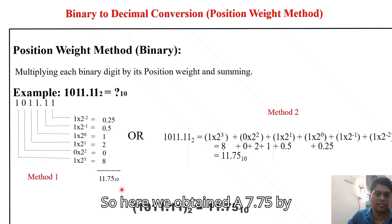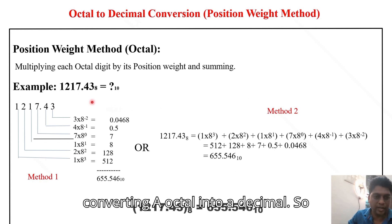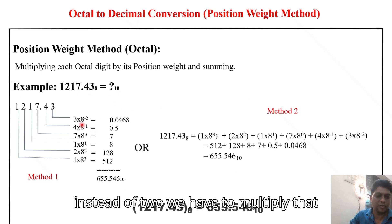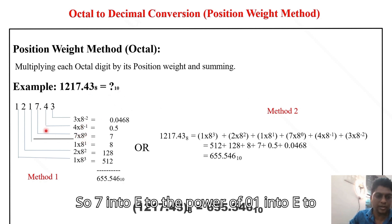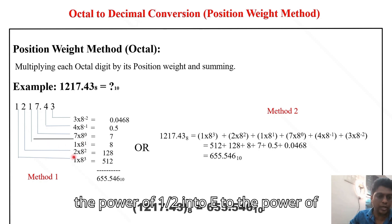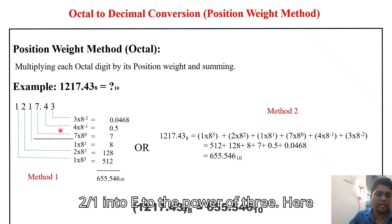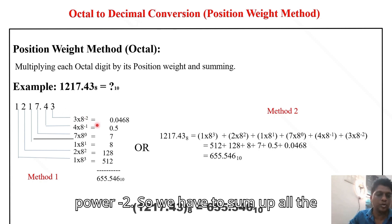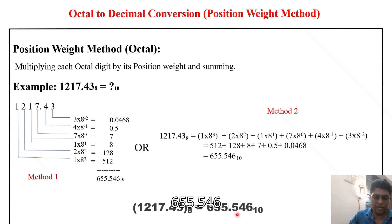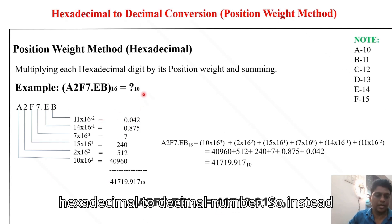For octal to decimal conversion, instead of base 2 we use base 8. So for example: 7 × 8⁰, 1 × 8¹, 2 × 8², 1 × 8³, and for the fractional part 4 × 8⁻¹ and 3 × 8⁻². Summing all the values gives us 655.546.